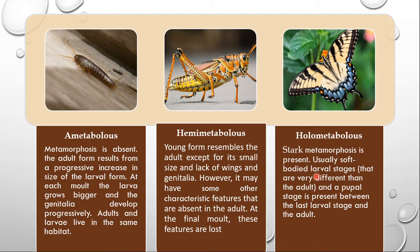In ametabolous insects, metamorphosis is absent. The adult form results from a progressive increase in size of the larval form. At each molt the larva grows bigger and the genitalia develop progressively. Adults and larvae live in the same habitat with no change in feeding habit - the only difference between larvae and adults is the development of genitalia. There are no wings in these insects.